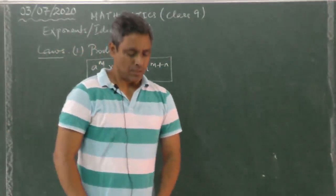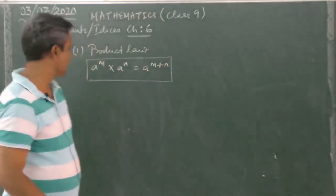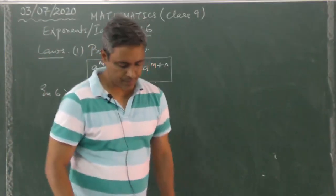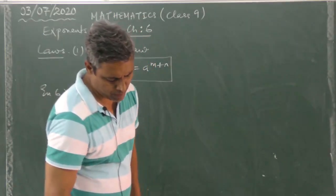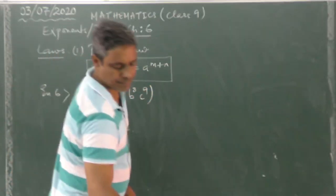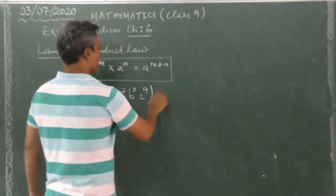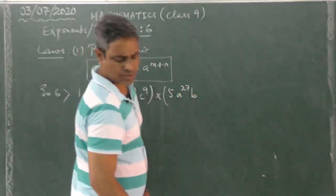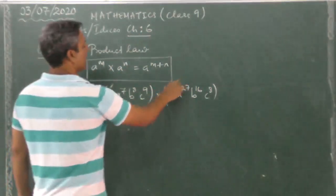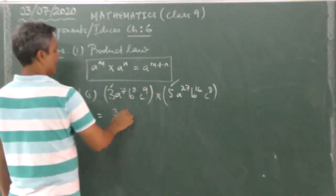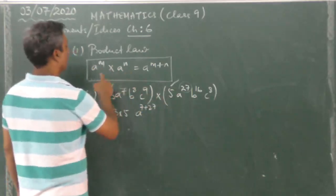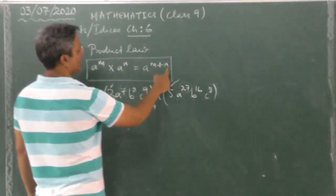Let us use it in a question — Question 1, Part 1 of Exercise 6. We have 3a to the power of 7, b to the power of 8, c to the power of 9, into 5a to the power of 27, b to the power of 16, c to the power of 8. First, multiply the numerals: 3 and 5. Then add the powers — 7 plus 27 — applying the law a to the power of m into a to the power of n equals a to the power of m plus n.